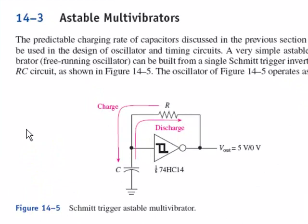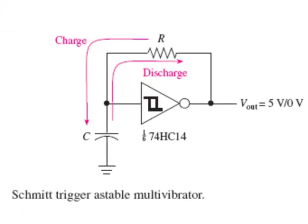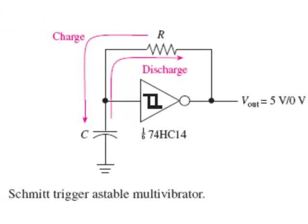Hi, this is Professor Kleitz and now we're going to talk about section 14.3 and the first astable multivibrator. We'll look at the circuit shown in figure 14-5, and in this circuit we're using an HC-14 which is a Schmidt trigger.